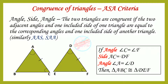The third criteria is ASA criteria — Angle, Side, Angle criteria. The two triangles are congruent if the two adjacent angles and one included side of one triangle are equal to the corresponding angles and one included side of another triangle. Here we can see that angle C is equal to angle F, side AC is equal to side DF, and angle A is equal to angle D. Therefore, the two triangles are congruent.